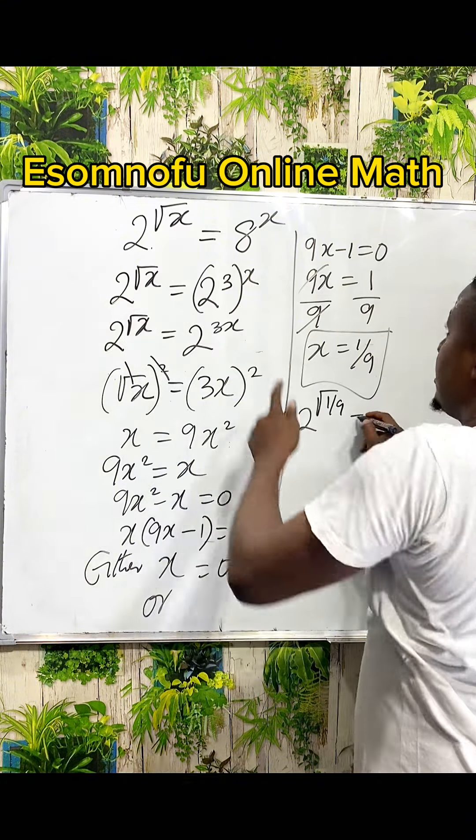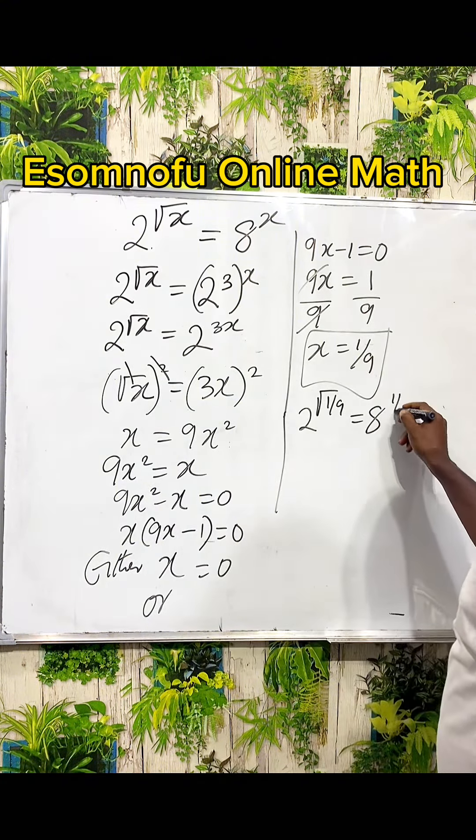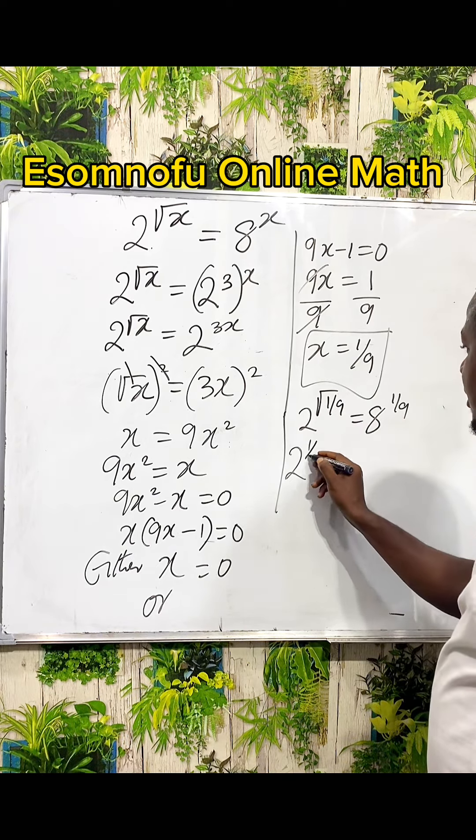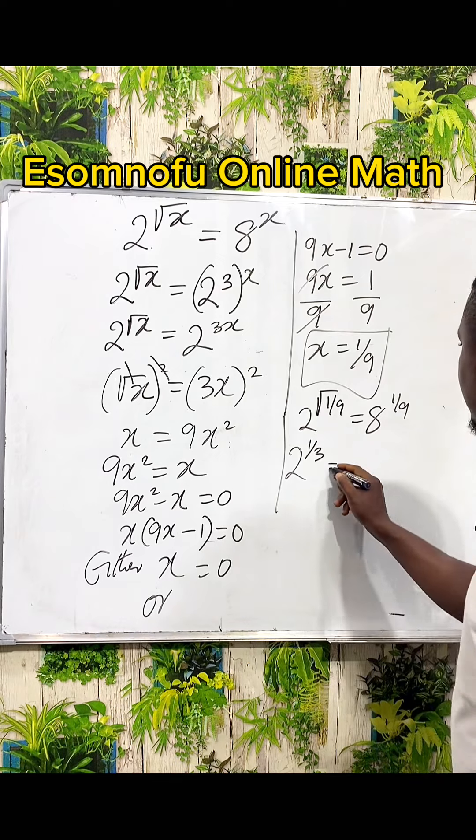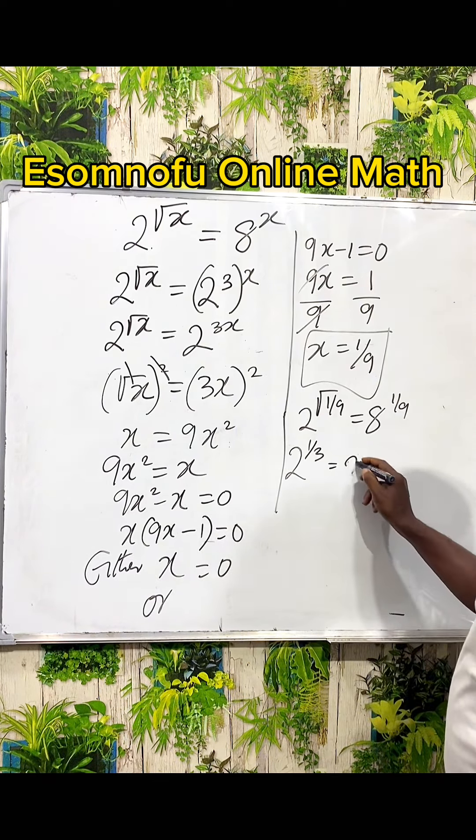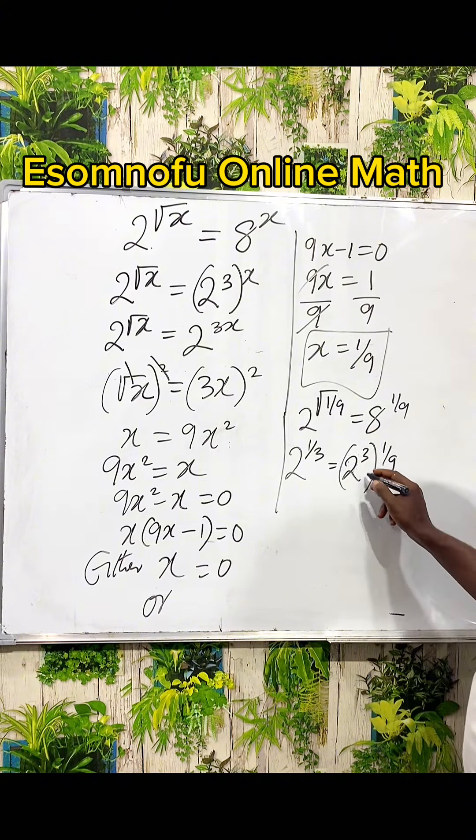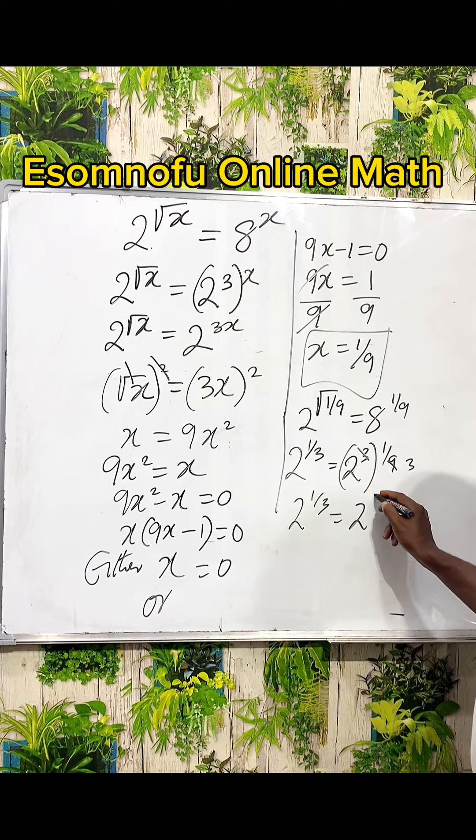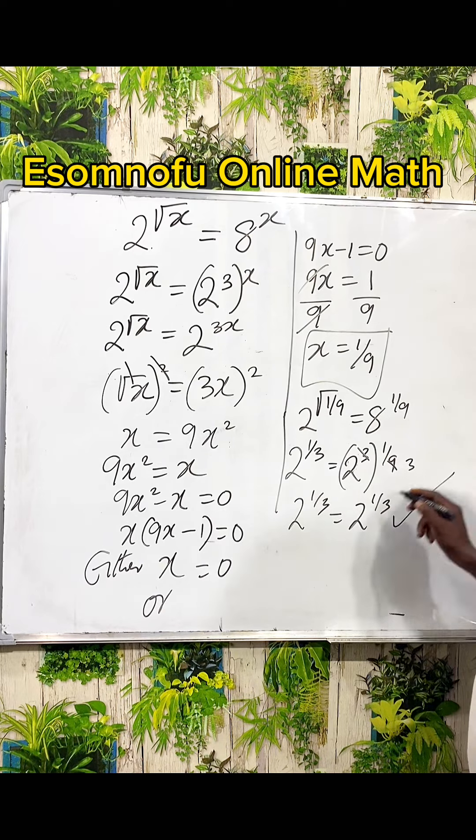You have 2^√(1/9) is equal to 8^(1/9). Square root of 1 is 1, square root of 9 is 3. Now, 8 is the same thing as 2³, then bracket 1 over 9. 3 here is 3, so we are having 2^(1/3) is 2^(1/3).